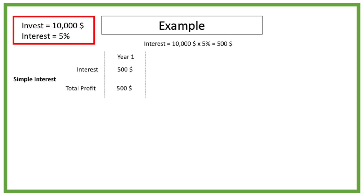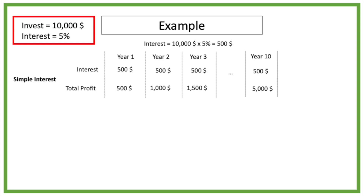The second year we get another 500 dollar in interest or profit, which brings our total profit to 1,000 dollar. After year 3 another 500 dollar, which brings the total to 1,500 dollar. So this means after 10 years our profit will increase to 5,000 dollar and after 20 years to 10,000 dollar. So every year this 500 dollar interest is paid as long as we keep the 10,000 dollar investment.